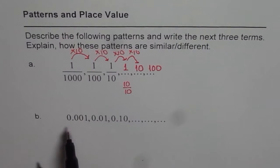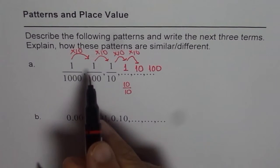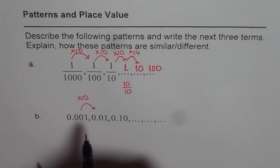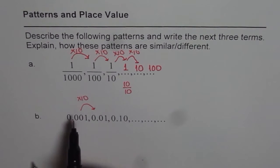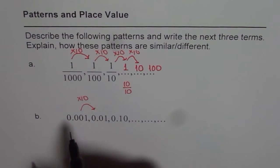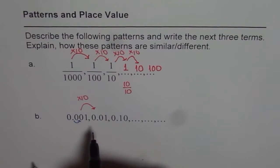Next one is 0.001, 0.01, 0.10. Now here again, as you have noticed, the pattern is similar. We are multiplying by 10 each time. So as we move, we multiply by 10 each time. So if I multiply by 10 each time, the decimal moves one unit to the right and the number becomes bigger and bigger.